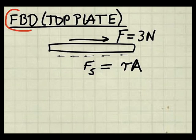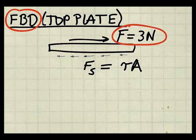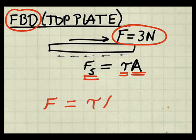Next, I've drawn a free body diagram of the top plate. This is the applied force of 3 newtons acting on the top of the plate. On the bottom of the plate is the frictional or drag force of the fluid. This is the shear force, and I get this by taking the shear stress in the fluid times the area of the plate. Since the sum of forces must equal zero on this plate, I can write F equals tau A.